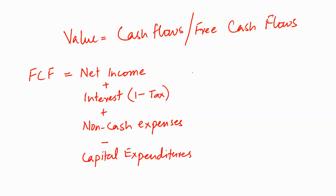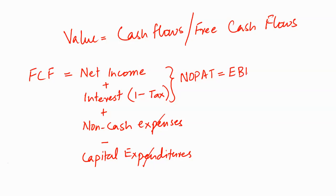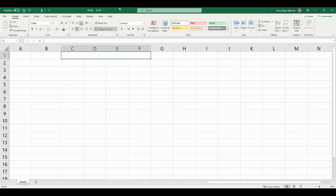In order to simplify our calculations, we are going to assume that non-cash expenses and capital expenditures are exactly the same, so that they cancel out each other and we are left with only net income plus interest. These two items are also known as net operating profit after taxes, or NOPAT, and can also be calculated as earnings before interest and taxes multiplied by 1 minus the tax rate. Both formulas give us the same result.